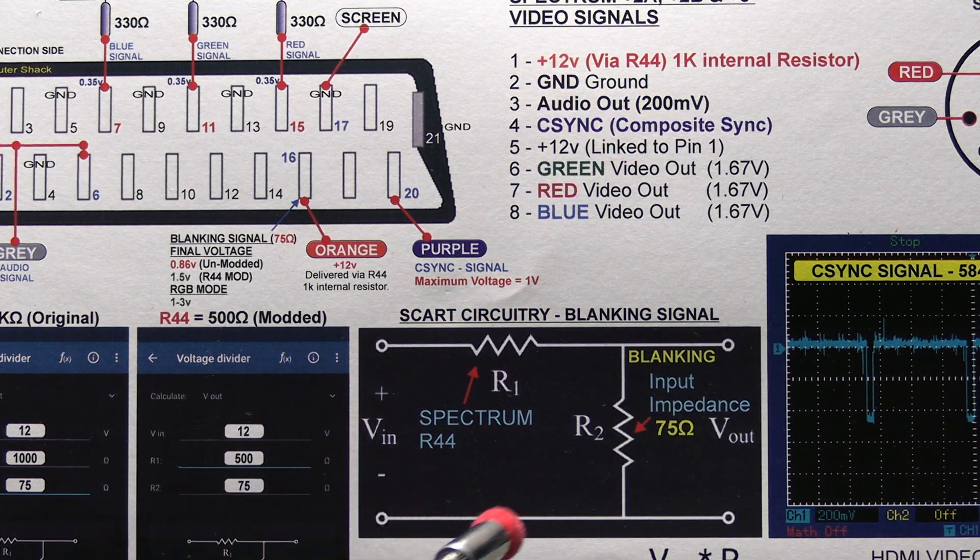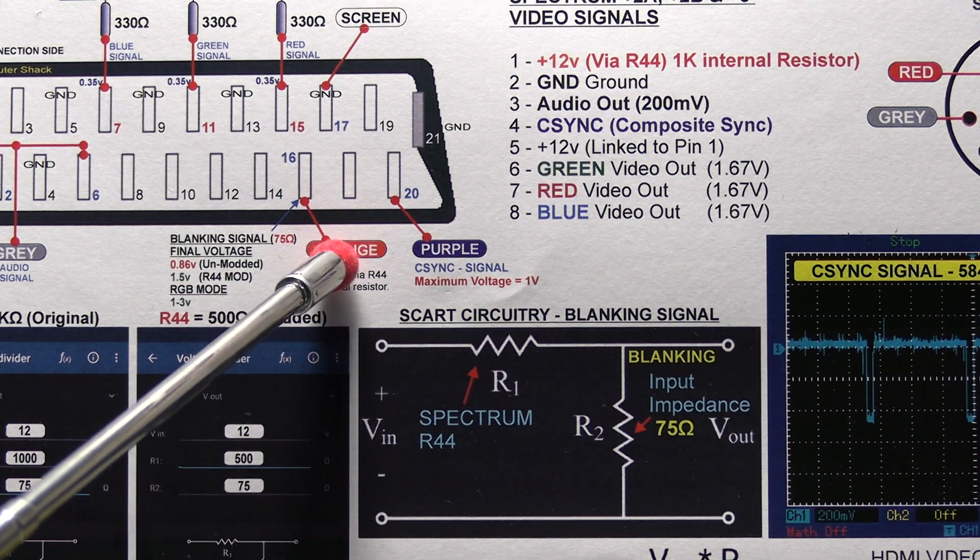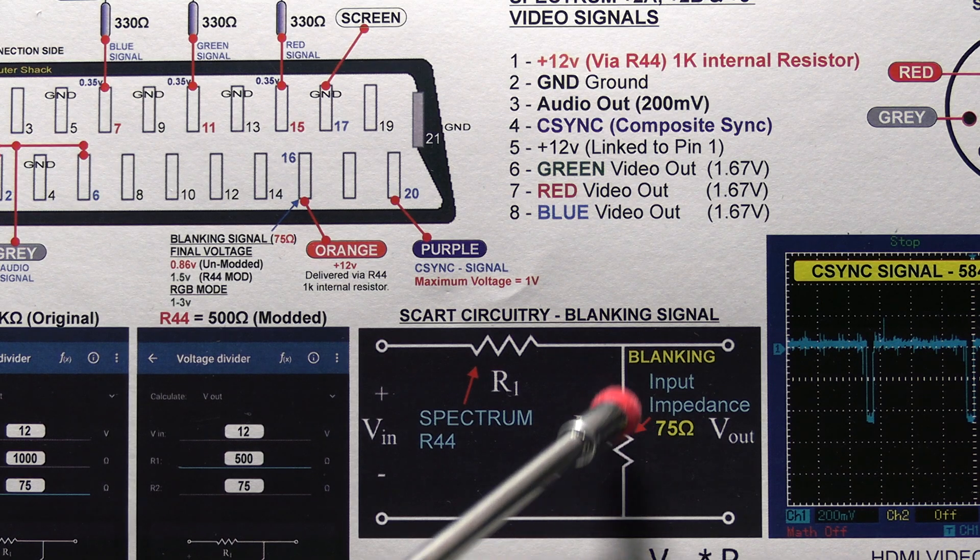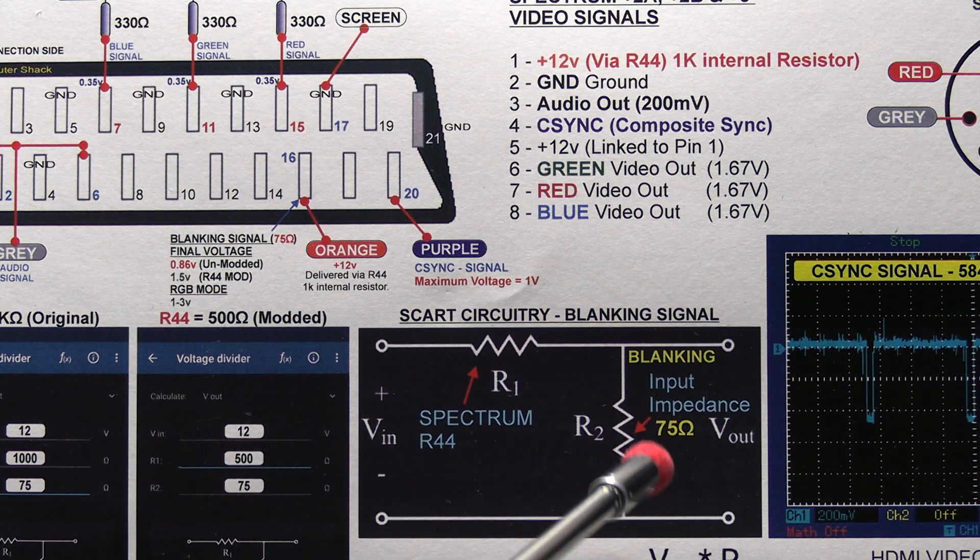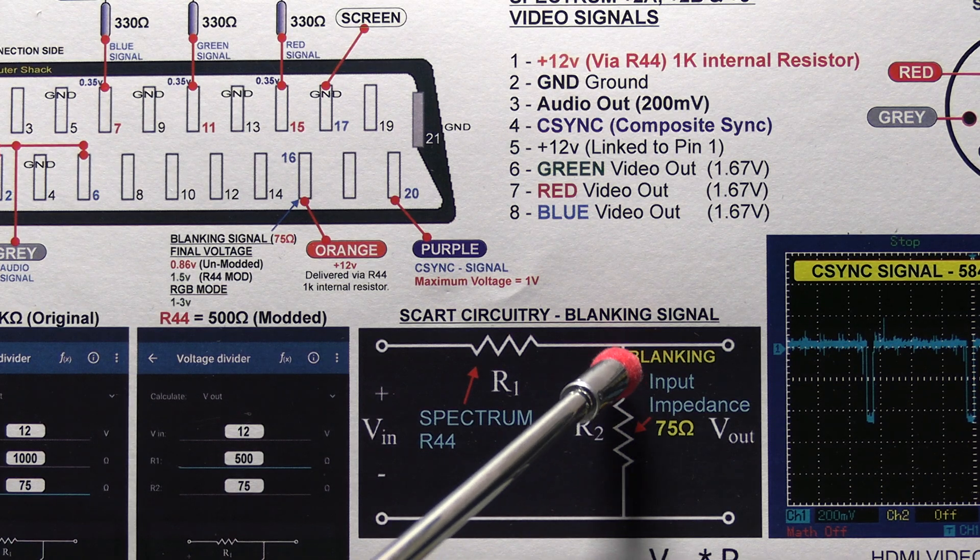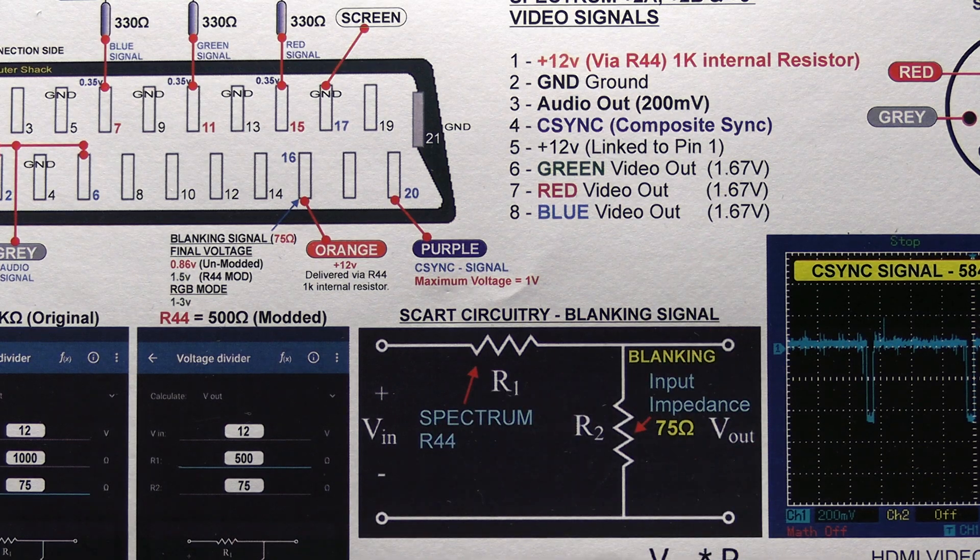However, the voltage drop is caused by the input impedance of the blanking signal on pin 16, which is 75 ohms. So basically this creates a voltage divider. And the 75 ohms resistor is basically going between the signal input and ground. So then it will drop voltage.